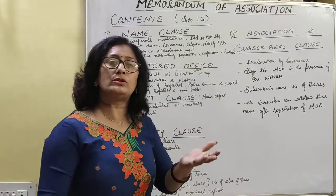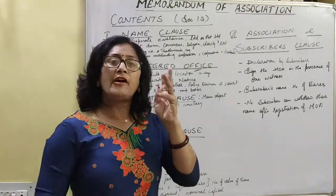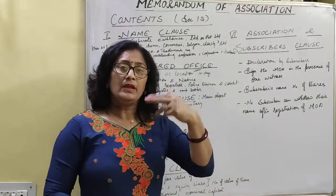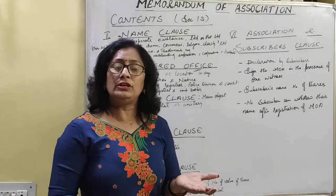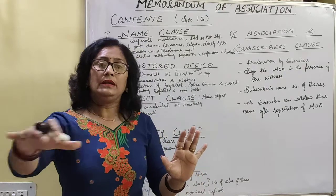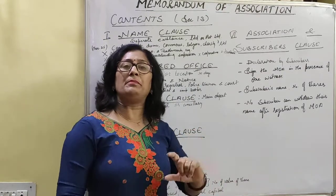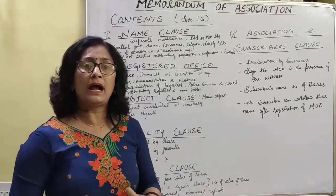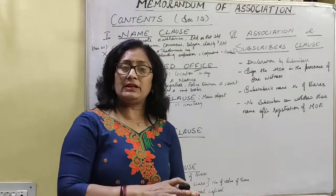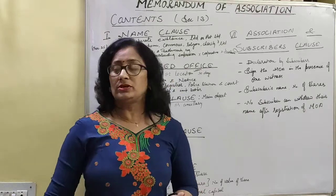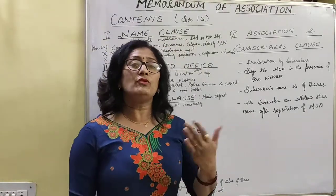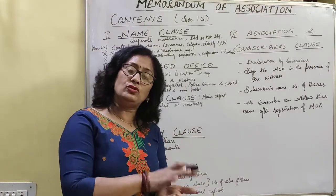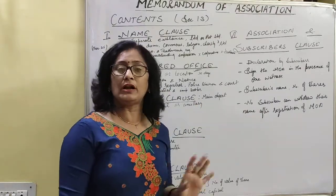Whenever the promoters or directors have decided the name of a company, they have to mention three names on a priority basis — first, second and third — to the Registrar. Those names should be published in a newspaper as a declaration that they are establishing a company by that name. If anybody has an objection, they can raise it. Then you will write the name on the name clause, mentioning the name to the Registrar.